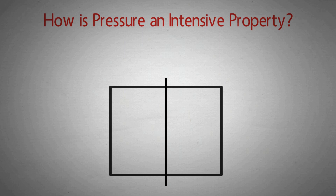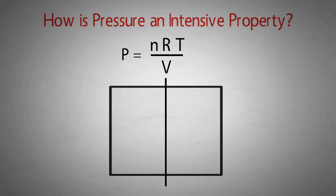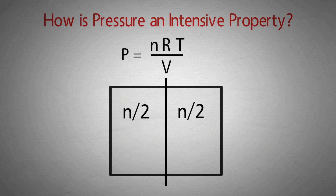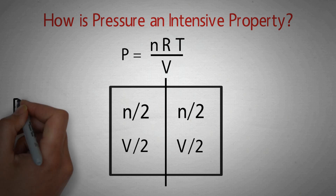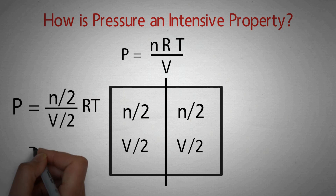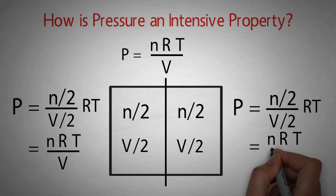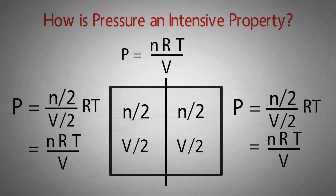अगर हम system को divide कर दें तो क्या pressure में कोई difference आएगा? P = nRT/V, which is the ideal gas equation. System को divide करने पर R में कोई difference नहीं आएगा because it is a constant, और temperature भी same रहेगा। Difference n (number of moles) और V (volume) में आएगा। अगर equally divide किया जाए तो n → n/2 और V → V/2। First part में P = (n/2)/(V/2) × RT = nRT/V। Second part में भी P = nRT/V। So system divide करने पर भी pressure में कोई difference नहीं आया — pressure is an intensive property.